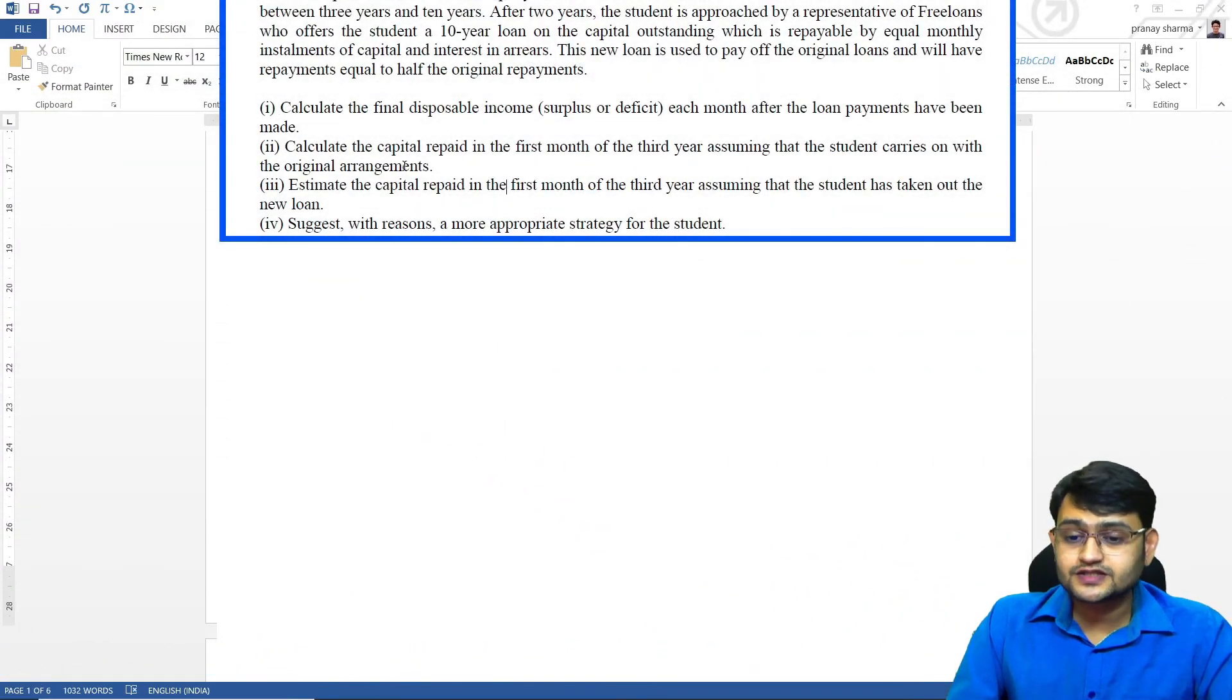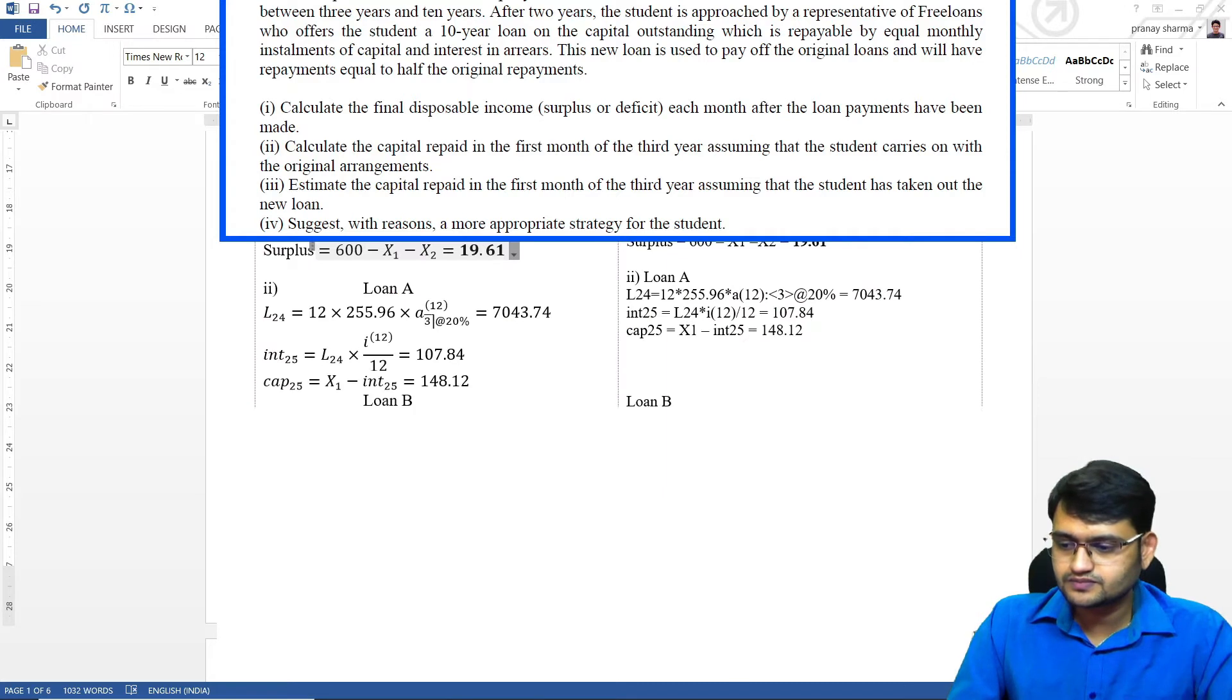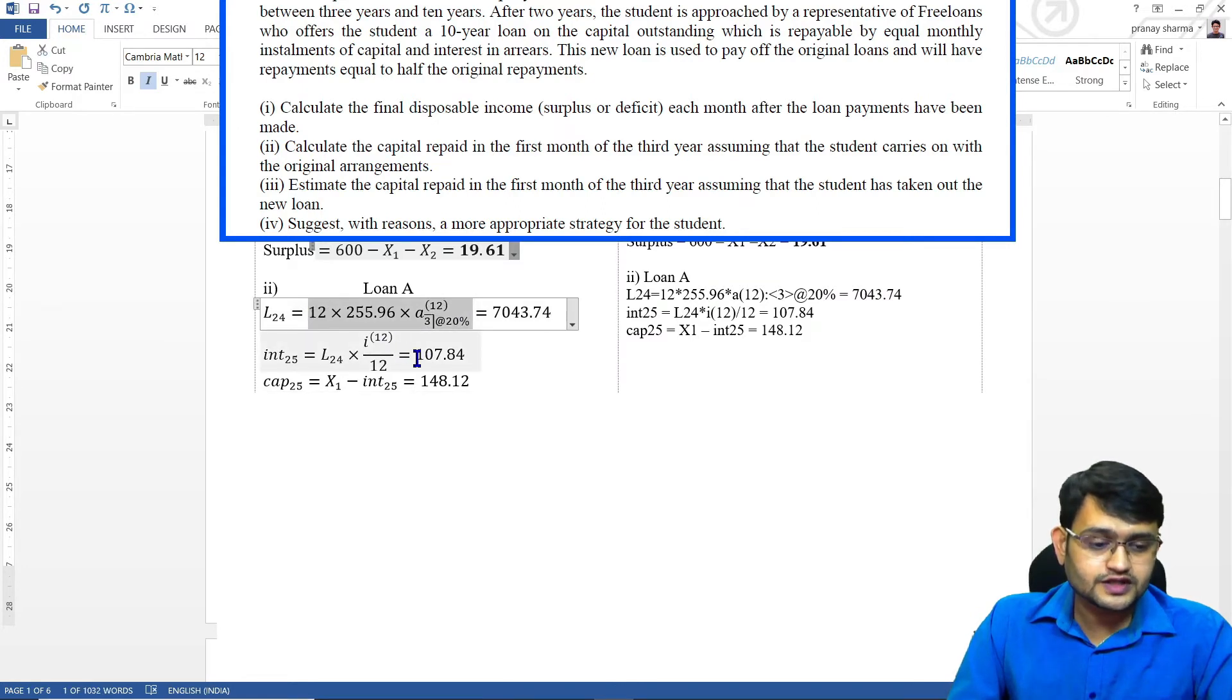For the second part they say calculate the capital repaid in the first month of the third year assuming that the student carries on with the original loan arrangement. So here we will calculate the loan outstanding and interest and capital component for the 25th payment. So first for loan A we have here loan outstanding after two years, interest component and capital component. Again you do not have to show any intermediate formulas, we just have to write the formulas for these values.